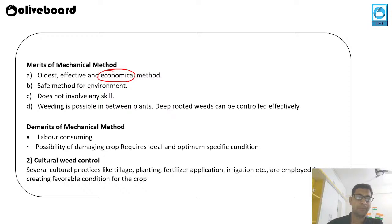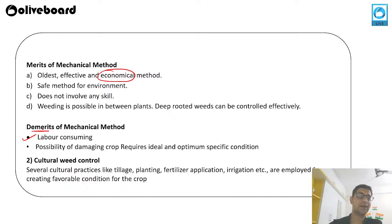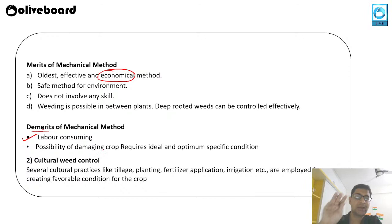The merits of mechanical weed control: it is the oldest, effective, and economical method; it is safe for the environment; does not require very specific skills; and deep-rooted weeds can be controlled effectively. The demerits: it is a labor-consuming activity; there is a possibility of damaging the crop; and it requires ideal and optimum specific conditions.